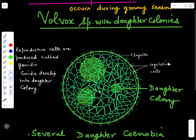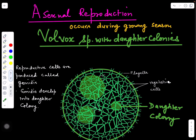This completes the vegetative structure of Volvox. Now if we look at how asexual reproduction occurs in Volvox — this usually happens during the growing season, the favorable season, when it multiplies. Asexual reproduction will be discussed in the next video. Thank you for watching; if you like the video please like, share, and subscribe.